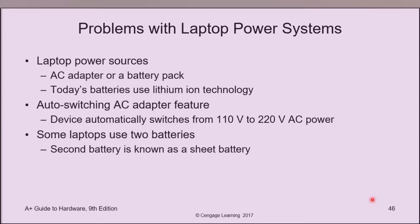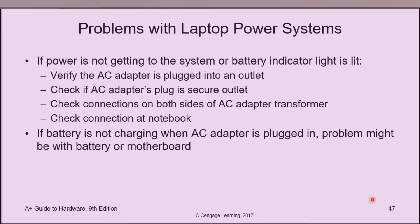Problems with laptop power systems. Laptop power sources include an AC adapter or battery pack. Today's batteries use lithium-ion technology. The auto-switching AC adapter feature—like auto-volt—automatically switches between 110 volts or 220 volts AC power. Some laptops use two batteries; the second is known as a sheet battery. If power is not getting to the system or the battery indicator light is lit, verify the AC adapter is plugged into the outlet, check that the AC adapter's plug is secure, check connections on both sides of the AC adapter transformer, and check the connection at the notebook. If the battery is not charging when the AC adapter is plugged in, the problem might be with the battery or the motherboard.